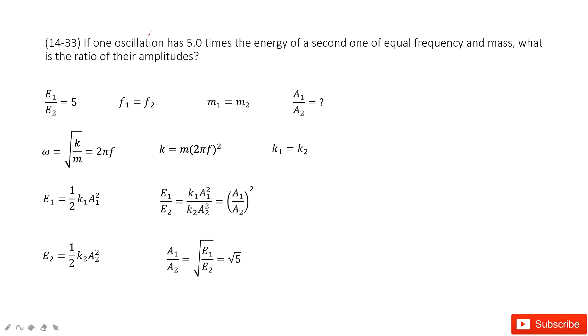Now we have two simple harmonic oscillations. The energy ratio E1 over E2 is 5, with the same frequency and the same mass. And we need to find the ratio of amplitude A1 over A2.